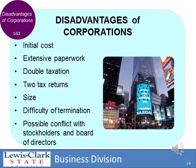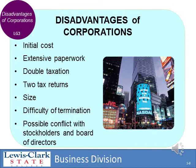Of course, with any advantage comes a disadvantage, and one of the disadvantages of corporations is something called double taxation. What that means is that corporate profits are taxed at the corporate income tax rate, but if those profits are distributed to the owners — to the shareholders — then those dividends or distributions are also taxed by the individual. So in theory, those profits are being taxed twice, which is why we call it double taxation.